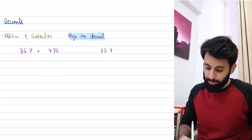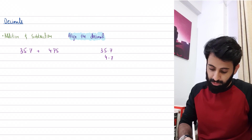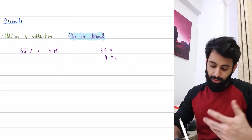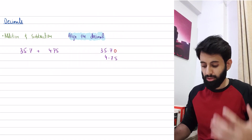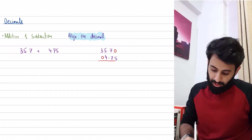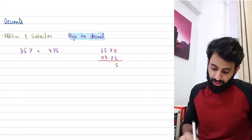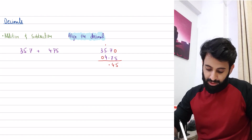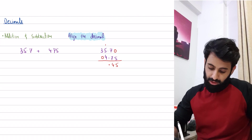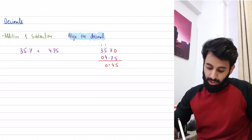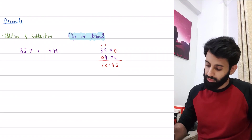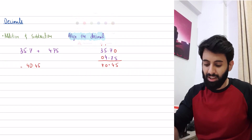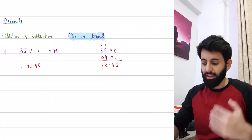So 35.7 plus 4.75 — wherever a place is empty, you can write a 0. So 0 plus 5 is 5; 7 plus 7 is 14, carry the 1. The whole idea of aligning the decimal is so you can just bring it straight down. Then 5 plus 1 is 6, 6 plus 4 is 10, write 0 carry 1; 3 plus 1 is 4, 4 plus 0 is 4. The final answer is 40.45.